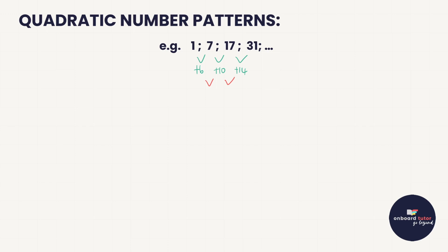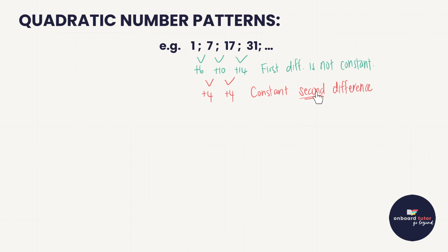Looking at the second differences: what do I add to 6 to get 10? The answer is 4. What do I add to 10 to get 14? Again, 4. So we have a constant second difference of 4. When number patterns have a constant second difference, they are known as quadratic number patterns.